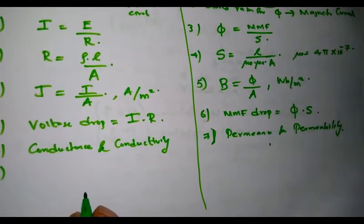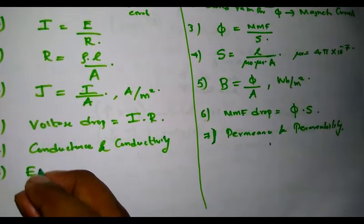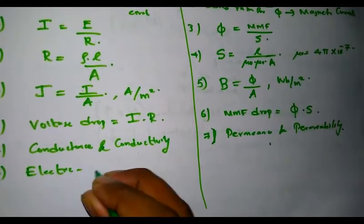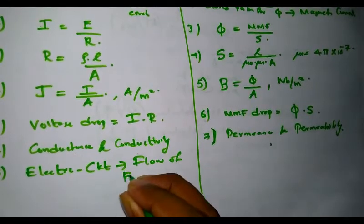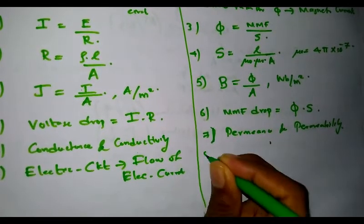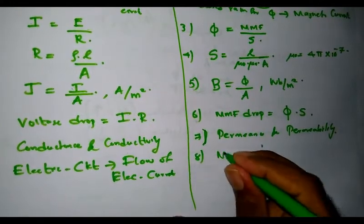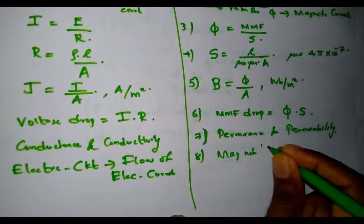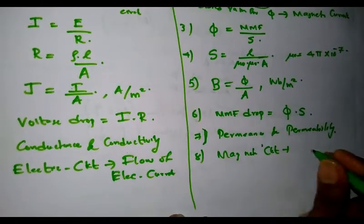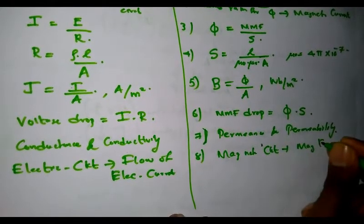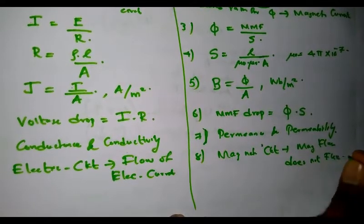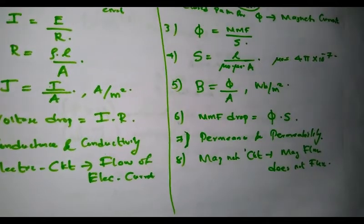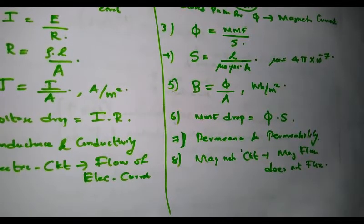An important distinction: in an electric circuit, there is a flow of electric current. Whereas in a magnetic circuit, magnetic flux does not flow. As a result of the MMF, the magnetic flux is set up across the circuit — it does not flow, it only sets up across the circuit.